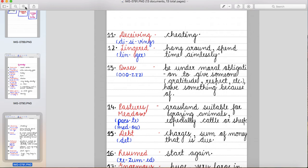Fourteen pasture. That means grassland suitable for grazing animals, especially cattle or sheep. Ghas ki jagah hai jahan peh animals ghas khane aate hai. It is also called as meadow.